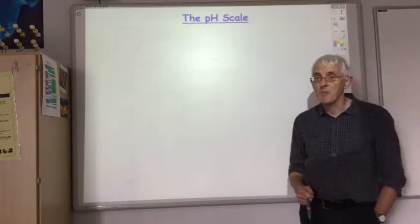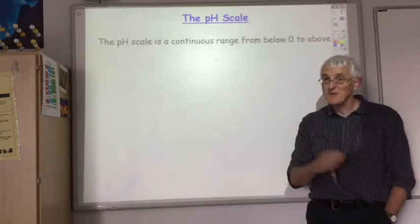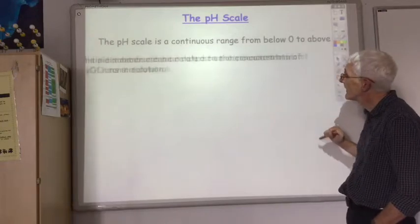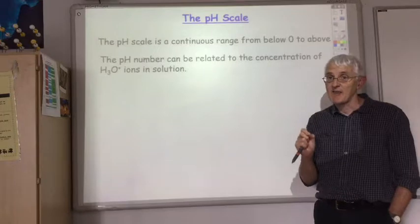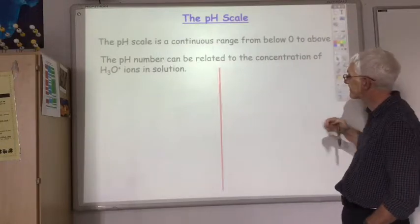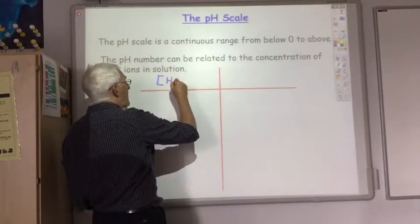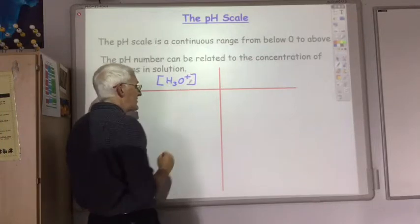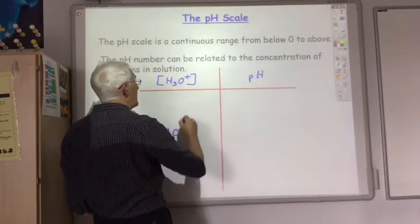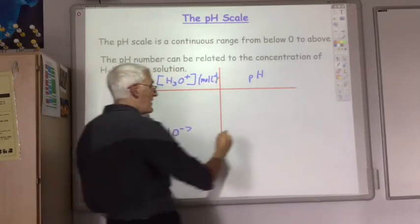As you can remember from national fifth and higher, the pH scale is a continuous range which goes from below zero to above 14, although we generally work within 0 and 14 in the chemistry lab. The actual pH number is directly related to the concentration of hydrogen ions in the solution. For example, if the hydrogen ion concentration in moles per litre is 10 to the minus 7, then the value of the pH will be 7.